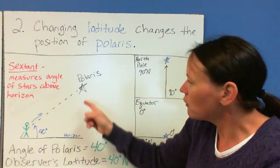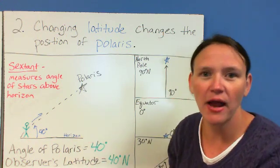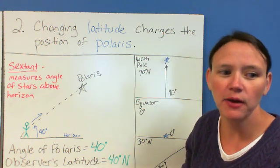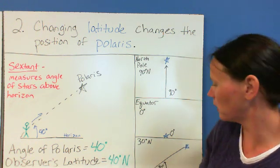And say that with that instrument, you see that this angle is 40 degrees. If the angle of Polaris above the horizon is 40 degrees, that means the observer's latitude is also 40 degrees north.